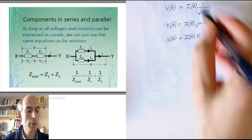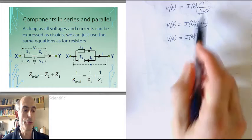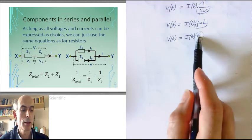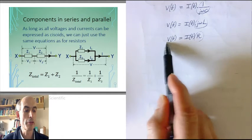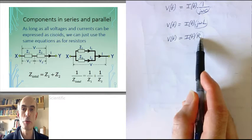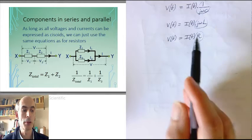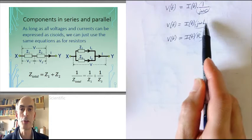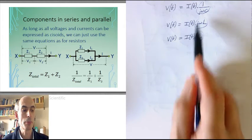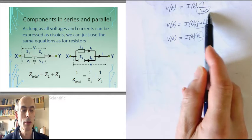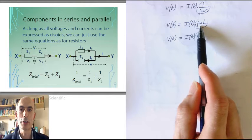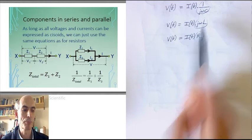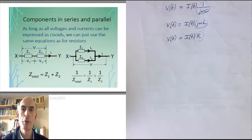Now all of these are, provided the frequency doesn't change, constant in the circuit. And that means that all of the results that we've derived for Ohm's law previously can also be applied to capacitors and inductors, provided you treat capacitors as having a complex impedance of 1 over jωC and inductors as having a complex impedance of jωL — including the formulas for putting components in series and parallel.